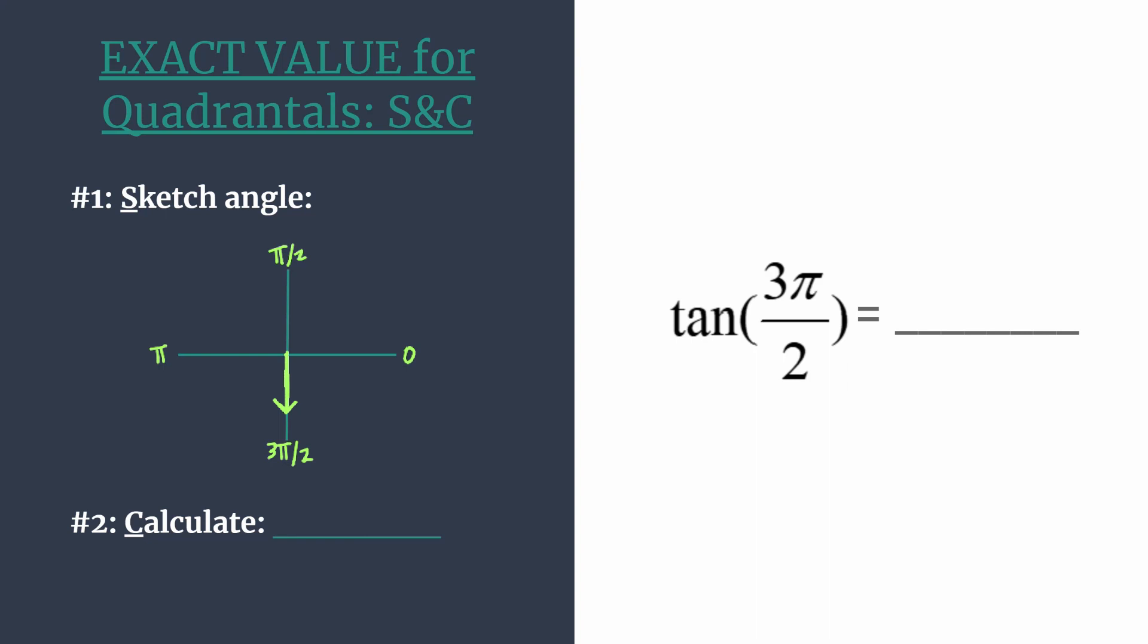Now we can easily find the coordinates. Remember we have it centered here on the origin. The radius of the unit circle is 1, so moving from the origin down 1, our coordinates are just 0, negative 1.